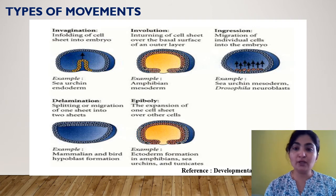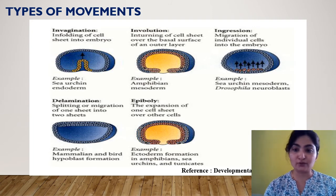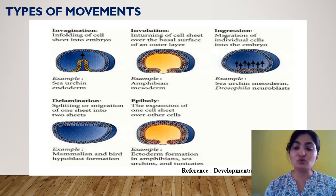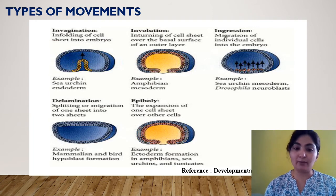The third movement, ingression, involves migration of individual cells, not a cell sheet. Individual cells detach from the existing layer one by one and move into the blastocoel. This type of movement is known as ingression. For the fourth movement, delamination, as shown in the diagram, a single layer of cells — a single cell sheet — splits into two, and this split sheet moves into the blastocoel.